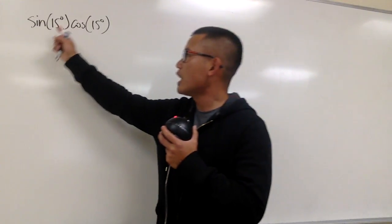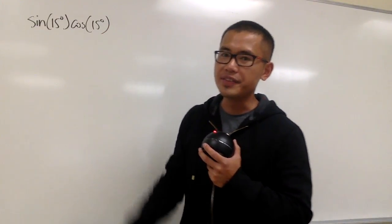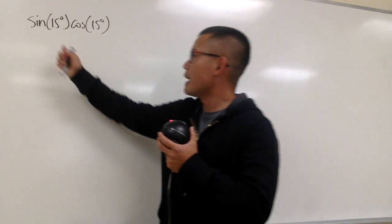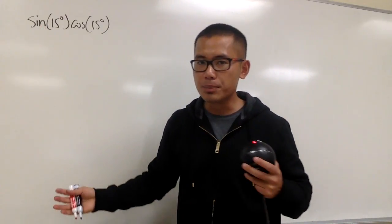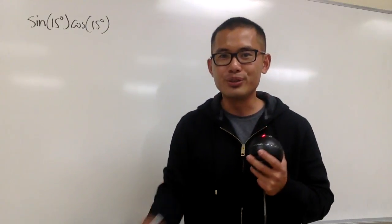Okay, we're going to calculate sine of 15 degrees times cosine of 15 degrees. And yes, we could possibly figure this out individually and at the end multiply them together, but don't do it like that.